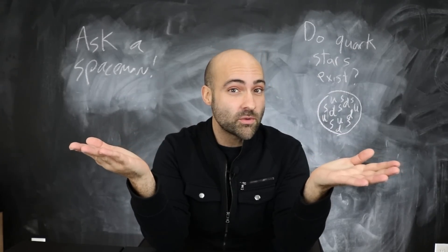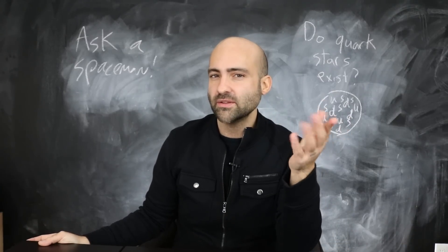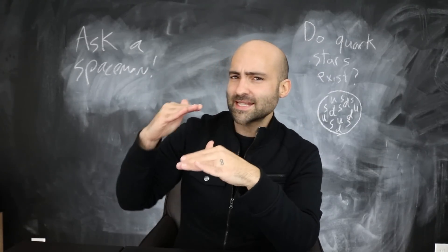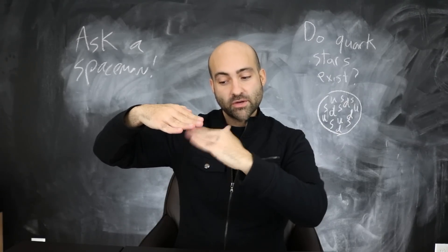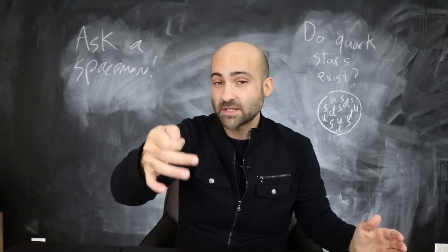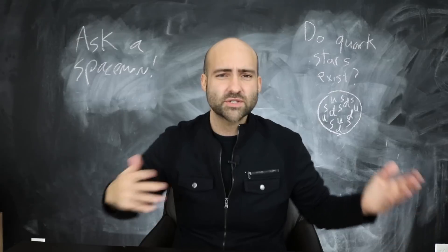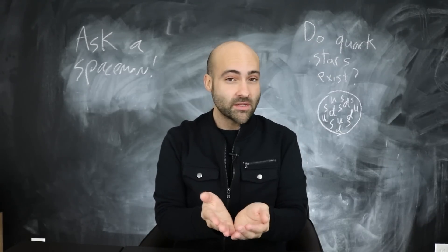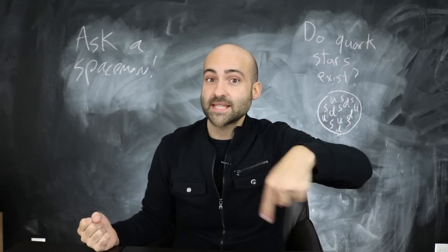There isn't strong theoretical motivation for a quark star, but is there any observational motivation? Kind of. There are some neutron stars that look a little fishy — maybe too dense or too massive to comfortably be called neutron stars. There's also a gap between the most massive neutron star and the least massive black hole we observe, somewhere between about two and three solar masses where we don't see any objects. Maybe quark stars fill that gap, or maybe it's just an observational gap because big neutron stars are rare and small black holes are hard to see.